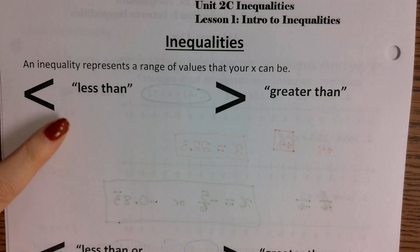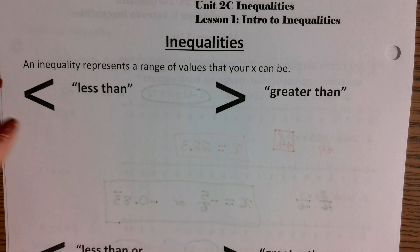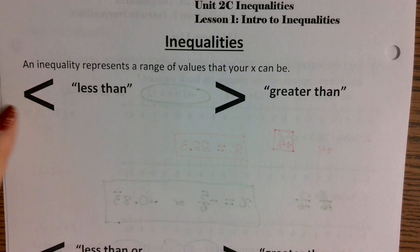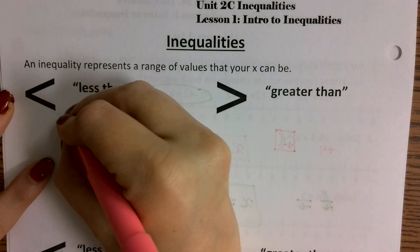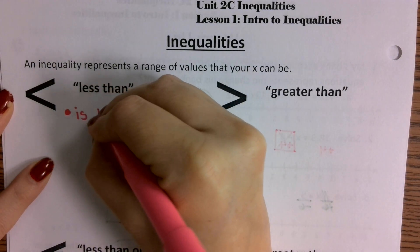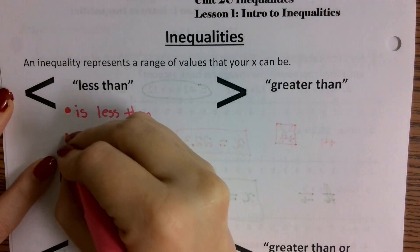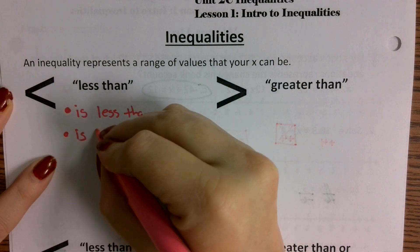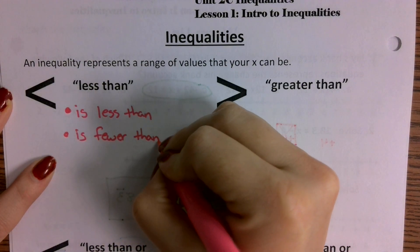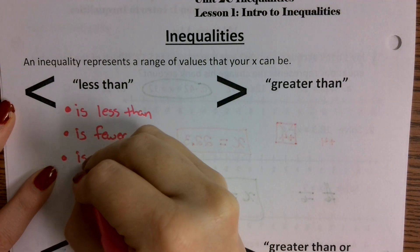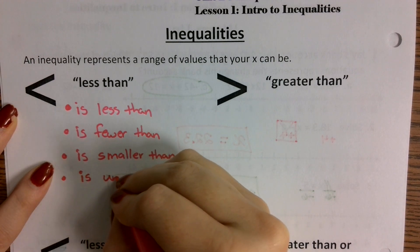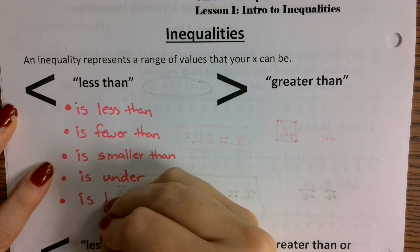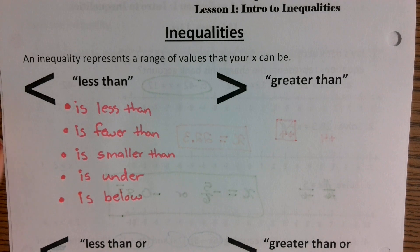This unit is very vocabulary heavy — each term has multiple different ways of expressing it. Make sure you have all these terms written down. For 'less than': is less than, is fewer than, is smaller than, is under, and is below.